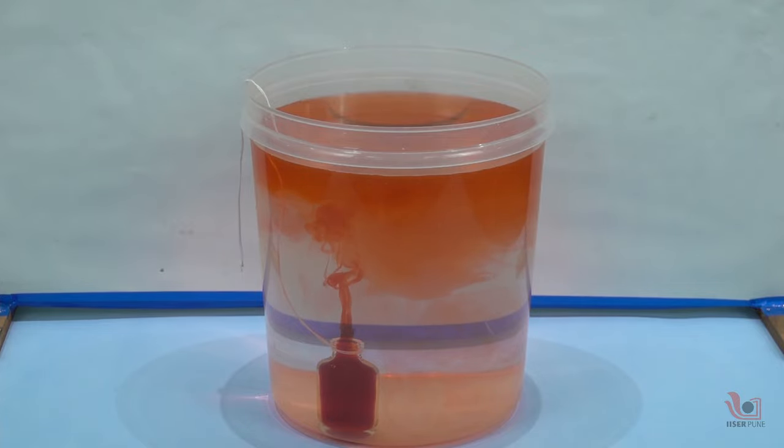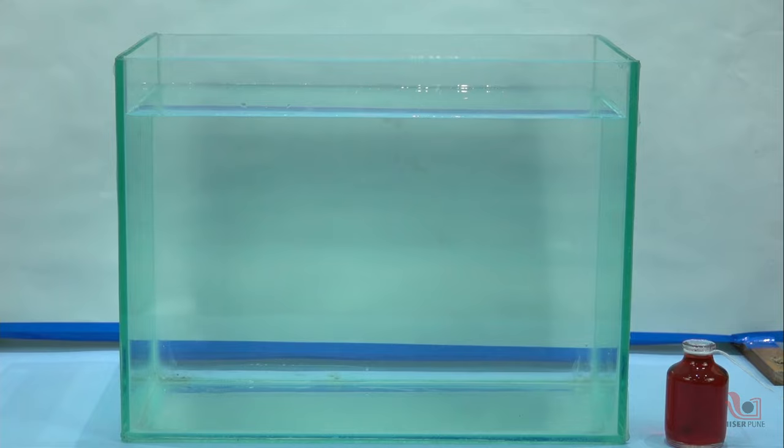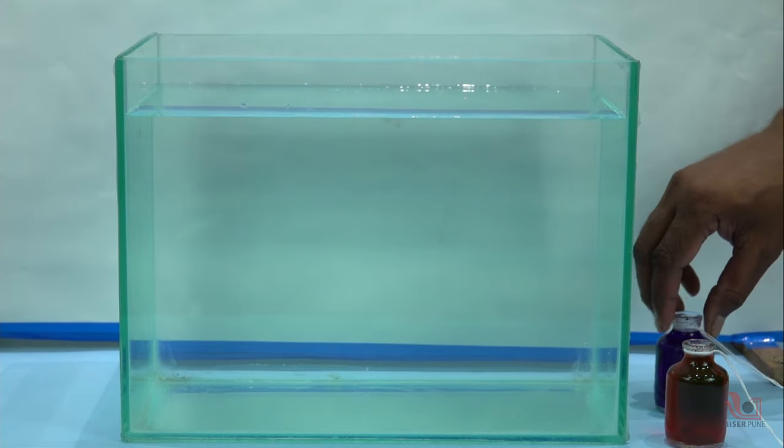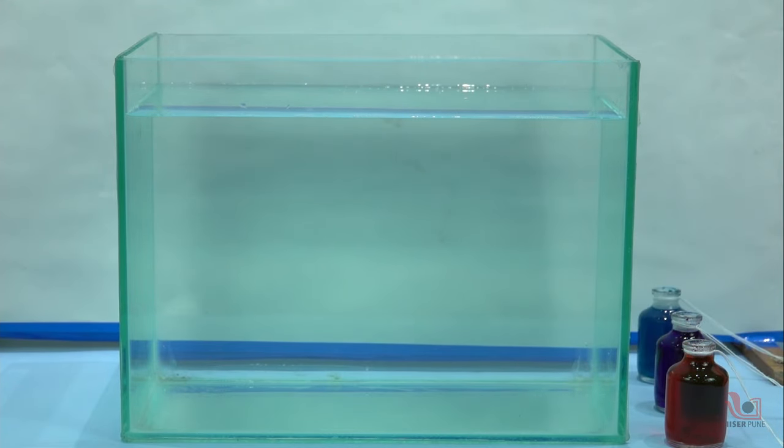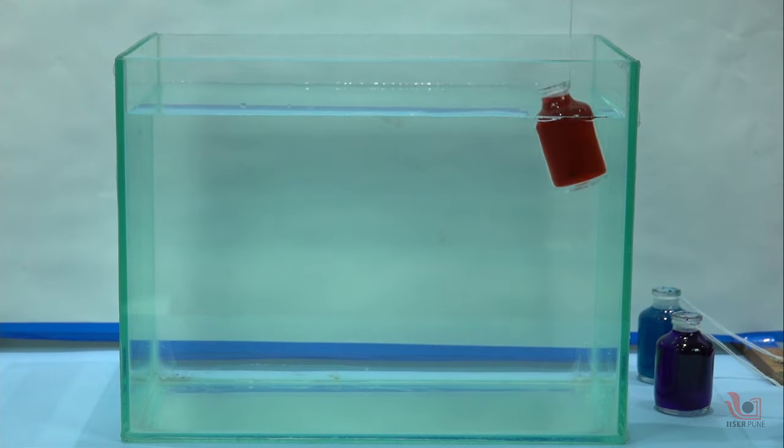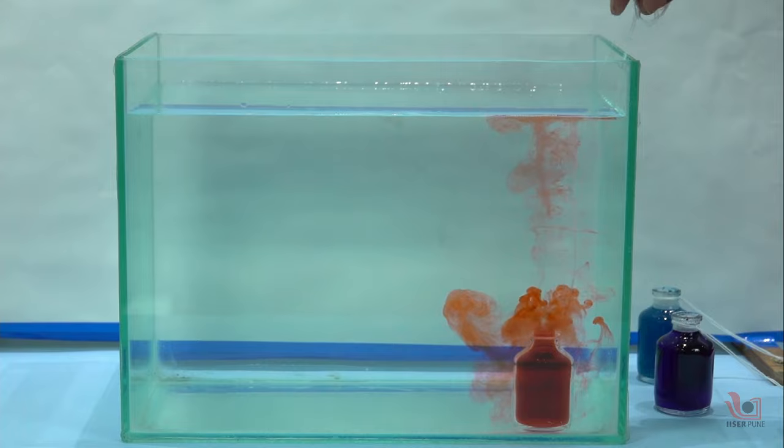You can make some changes to the experiment. Instead of using a single bottle, you can use three bottles and repeat the above activity. If you fill the three bottles with three different colors, then you will see different colors coming from the bottles.